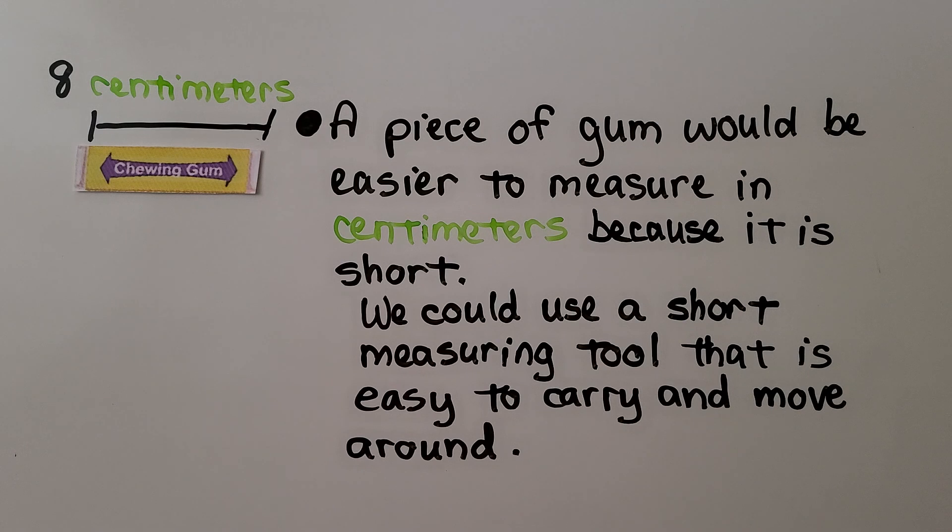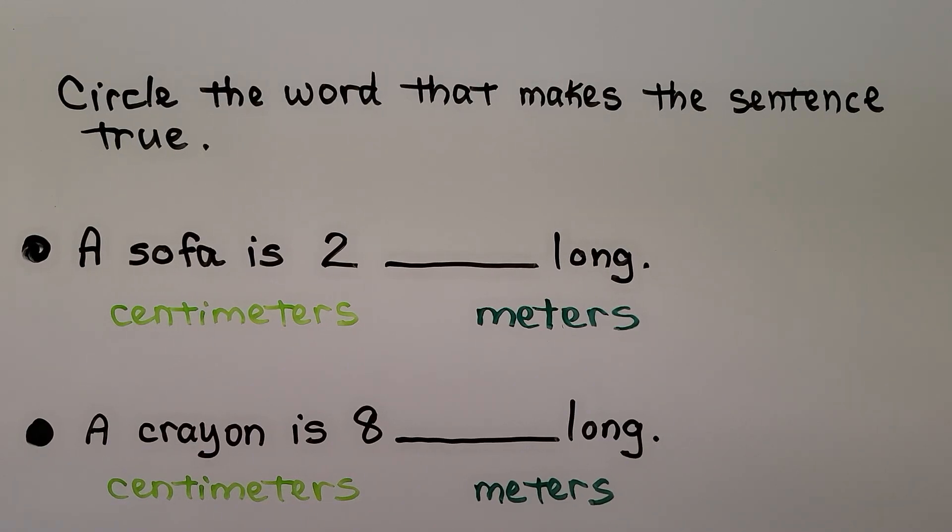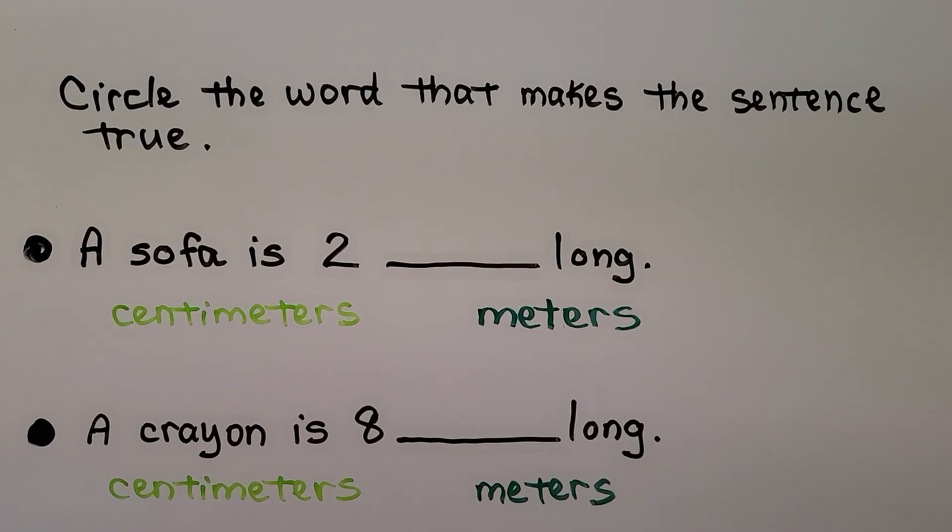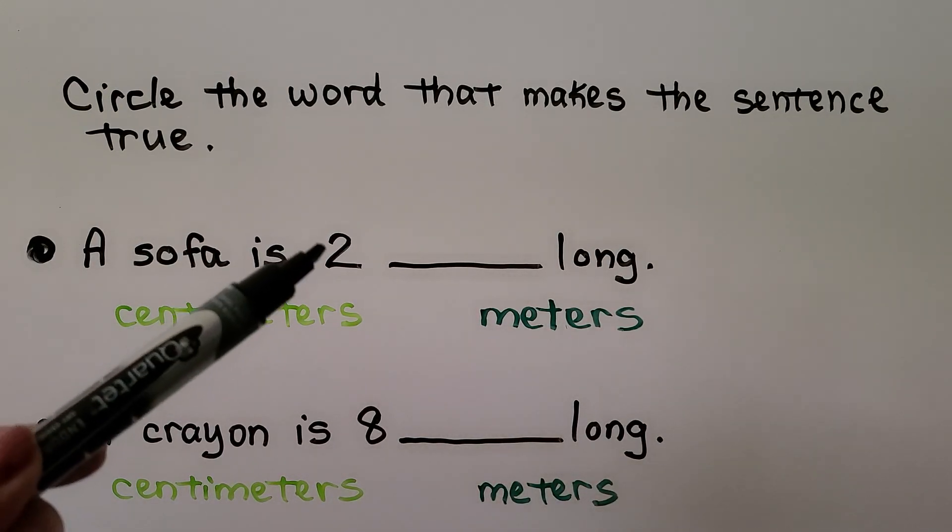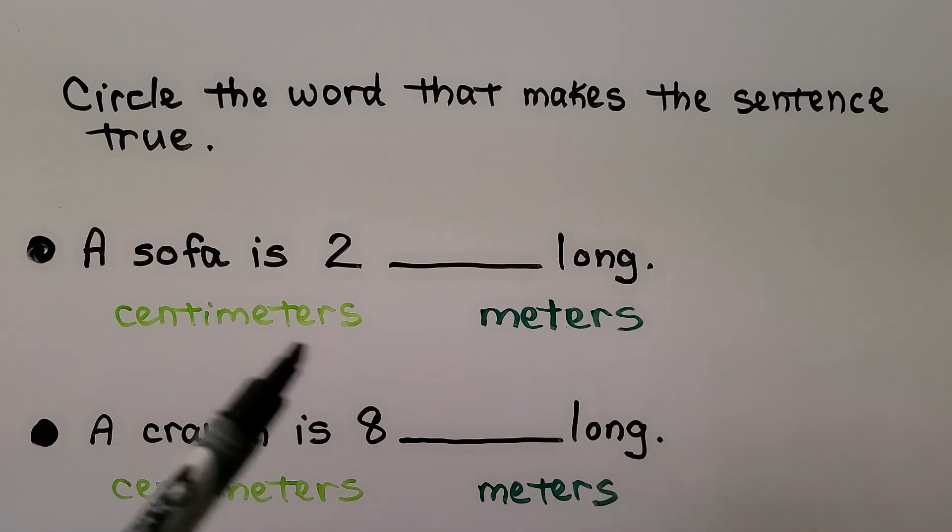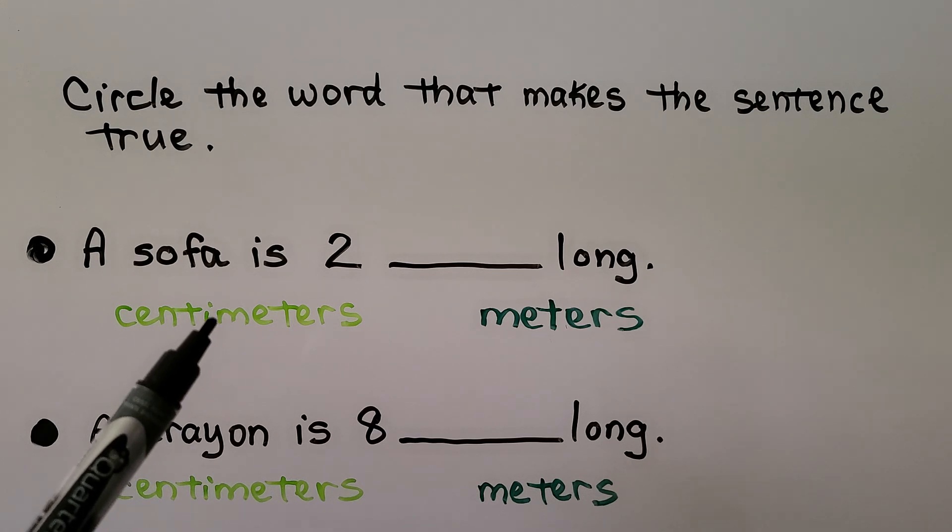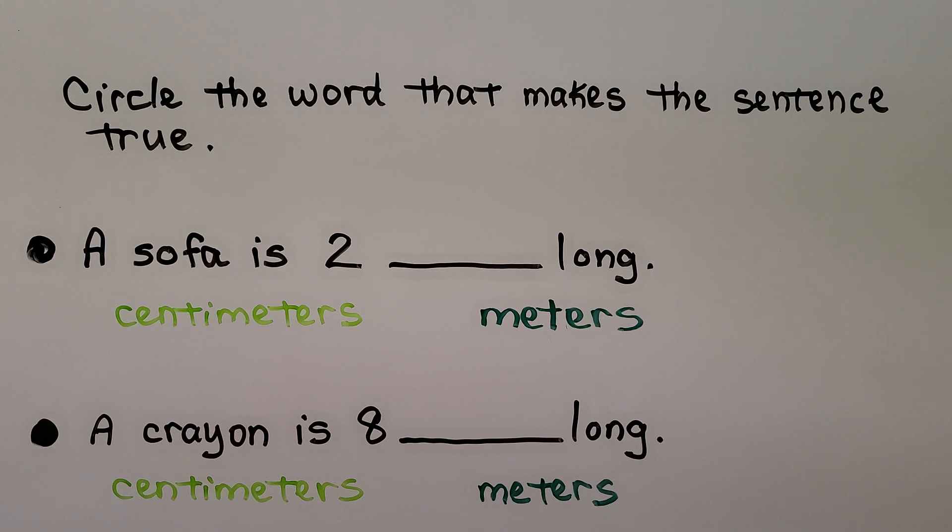We could use a short measuring tool that is easy to carry and move around. Here we need to circle the word that makes the sentence true. It says a sofa is two. Is it centimeters or meters long? Which one would make the sentence true? Which one sounds like it makes sense? Would a sofa be two centimeters or do you think it would be two meters? If you said meters, you're right.